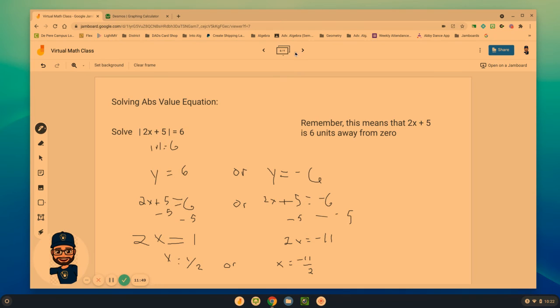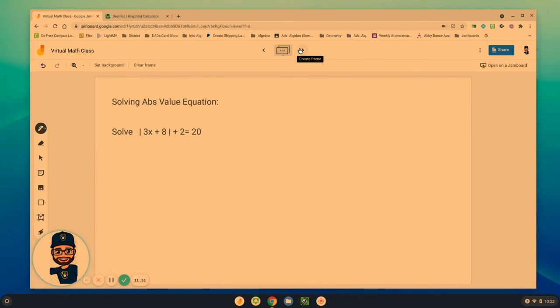One more example. Similar concept, similar idea here. We have this absolute value of 3x plus 8 plus another 2 on the outside of it equals 20. We really can't do anything until we isolate the absolute value. We need to isolate that all by itself on one side. So I need to first subtract 2.